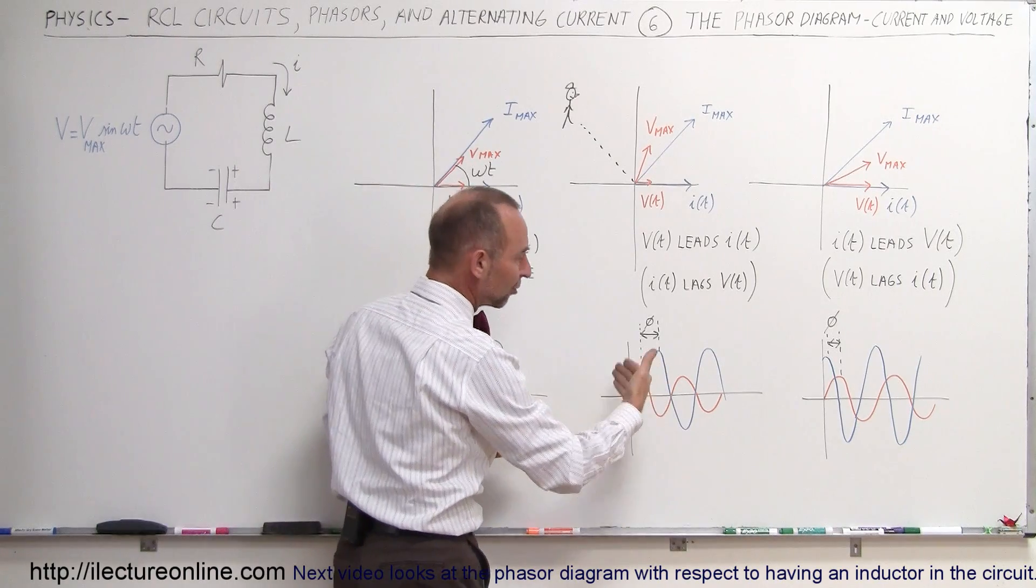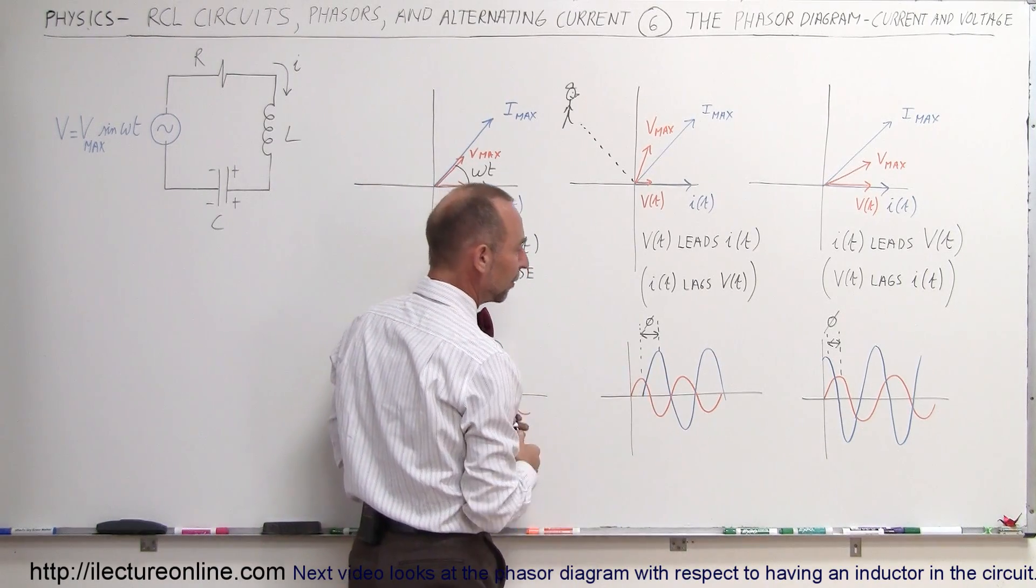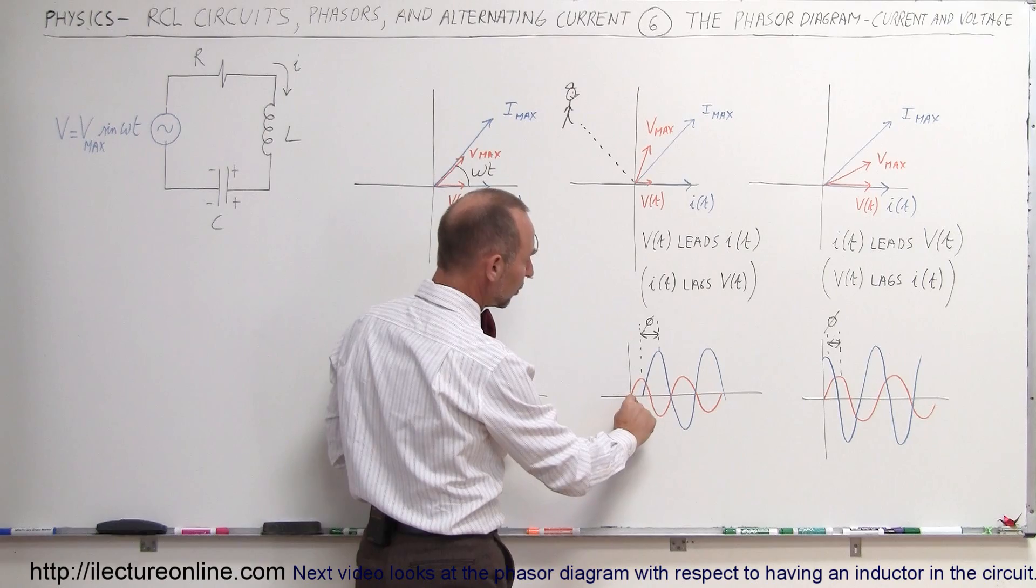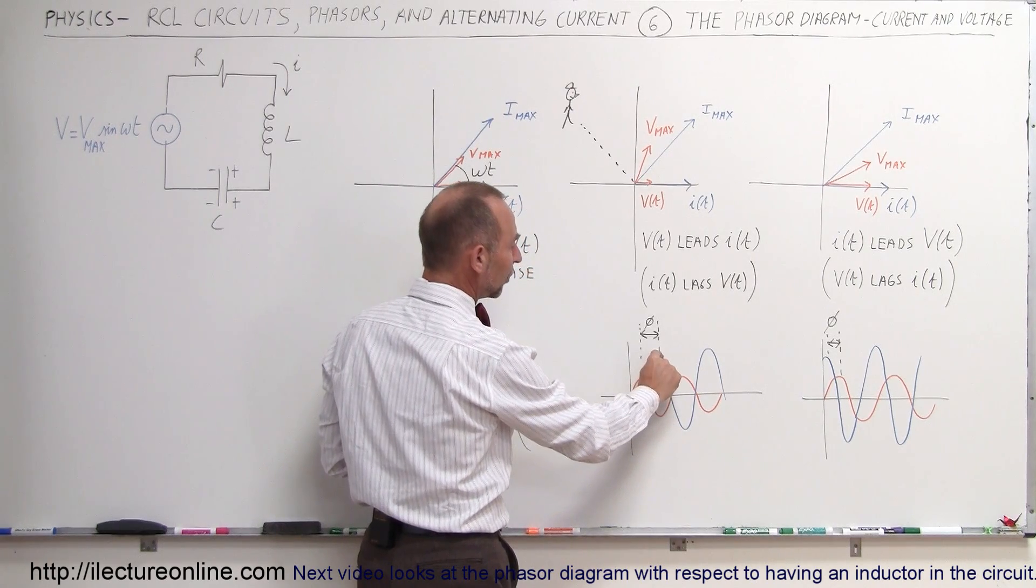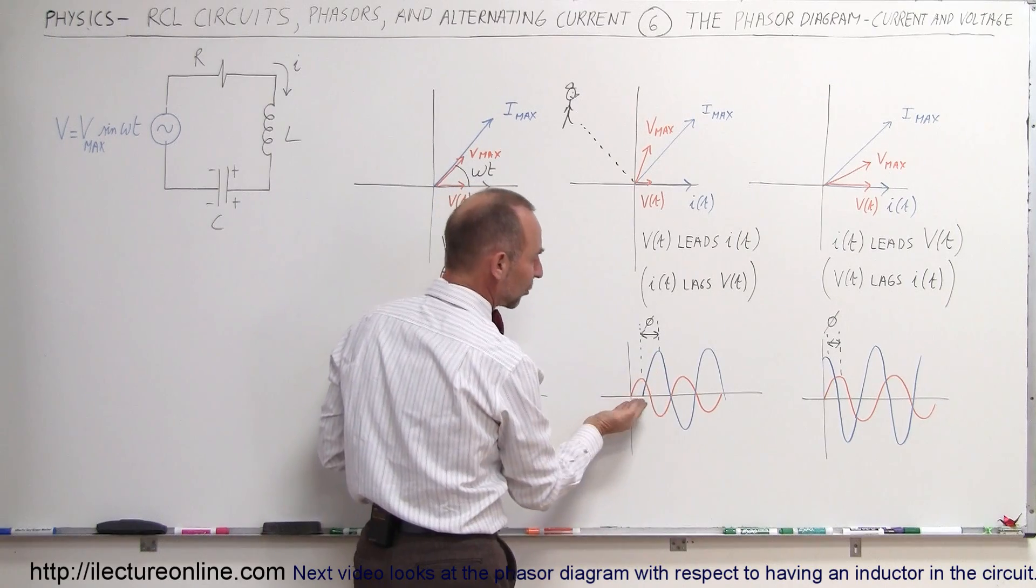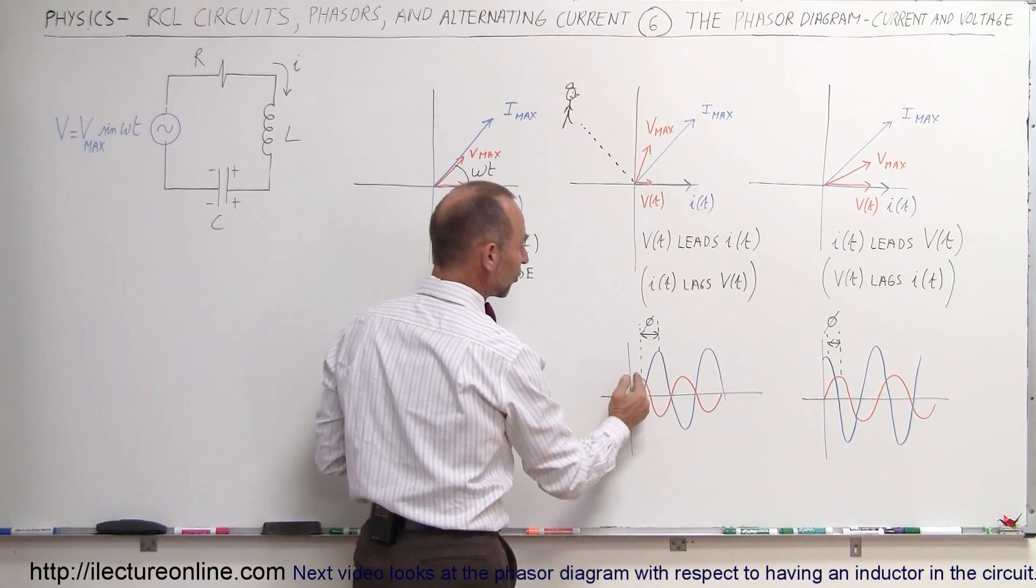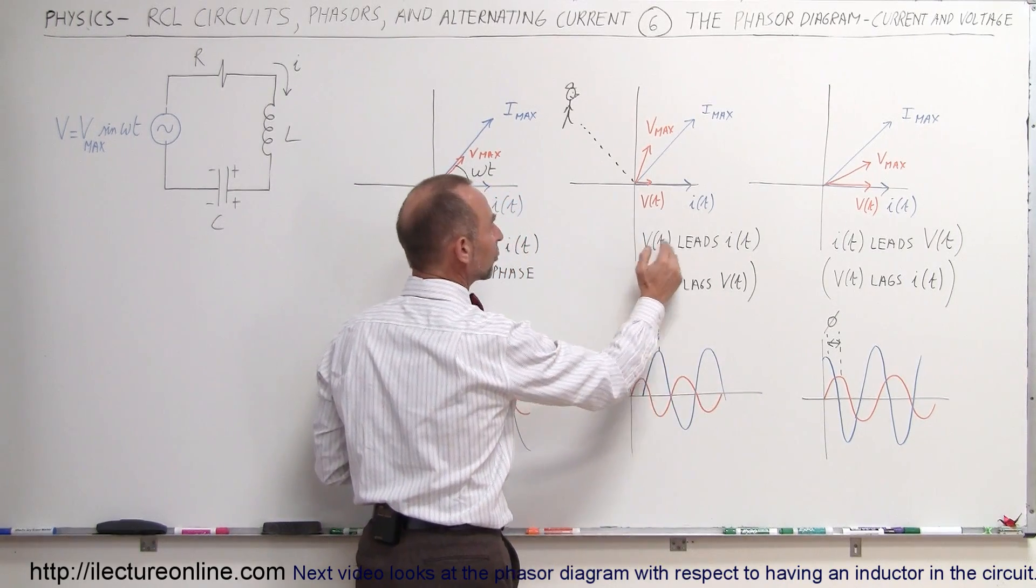And here if we draw that on a simple sine or cosine kind of function, you can see that the voltage reaches the maximum value before the current reaches maximum value, because time moves to the right, so voltage first, current next, so therefore voltage leads the current.